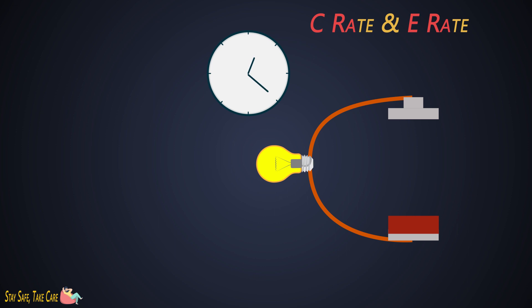A 1C rate is the current at which the battery will discharge entirely in one hour. For example, a battery having a capacity of 10 ampere-hours means theoretically it can provide 10 amperes of current for a whole hour, and then its juice runs out and it fully discharges.